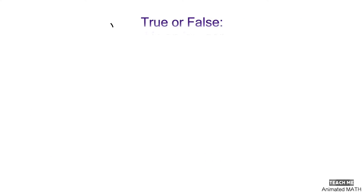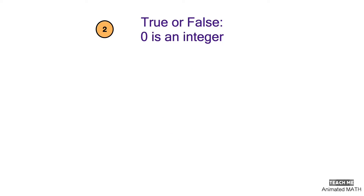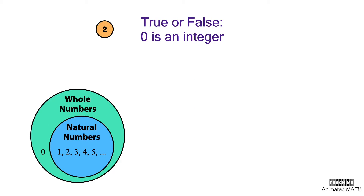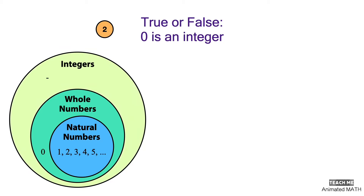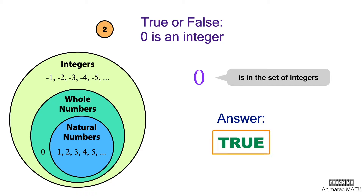True or false? Zero is an integer. Integers include the numbers in the set of whole numbers plus the opposite or negative of the positive whole numbers. Zero is in this set, so the answer is true.